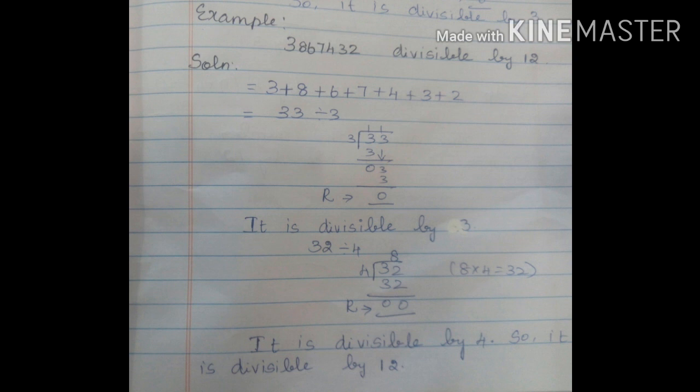So remainder value is 0. It is divisible by 3. Next, last 2 digits, so 32. 32 divided by 4. 8 times 4 is 32. So remainder value is 0.